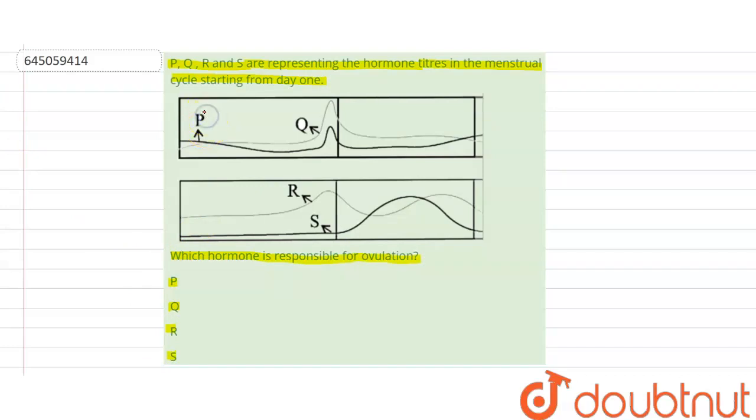So first is P. In this graph, P is represented by FSH, which is follicle-stimulating hormone.